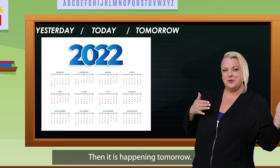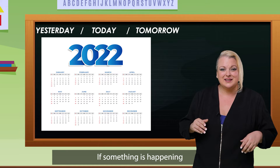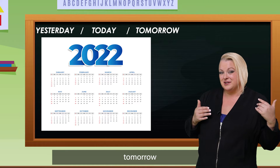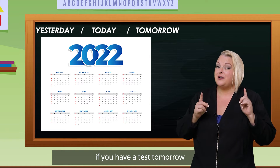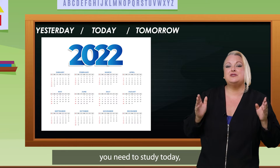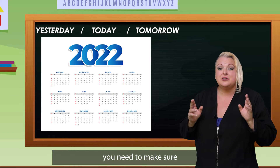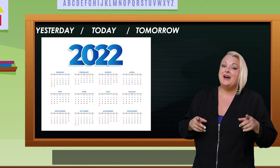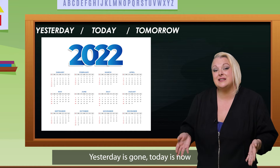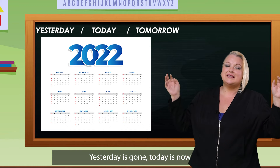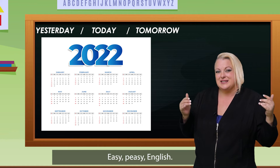What happens if something is happening the day after today? Then it is happening tomorrow. Tomorrow starts at 12 o'clock midnight. If something is happening tomorrow, it is nice to know so we can prepare. For instance, if you have a test tomorrow, you need to study today. Or if you have football practice, you need to make sure your football uniform is clean and your kit is ready. Tomorrow is still coming. Yesterday is gone. Today is now. And tomorrow is coming. Easy peasy English.